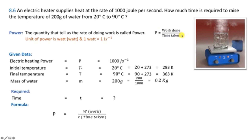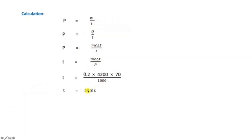Using power = work done / time, and work done = heat required = mcΔT. With m = 0.2 kg, c = 4200 J/kg·K, ΔT = 70 K, and power = 1000 W. Time = mcΔT / power = (0.2 × 4200 × 70) / 1000 = 58.8 seconds.